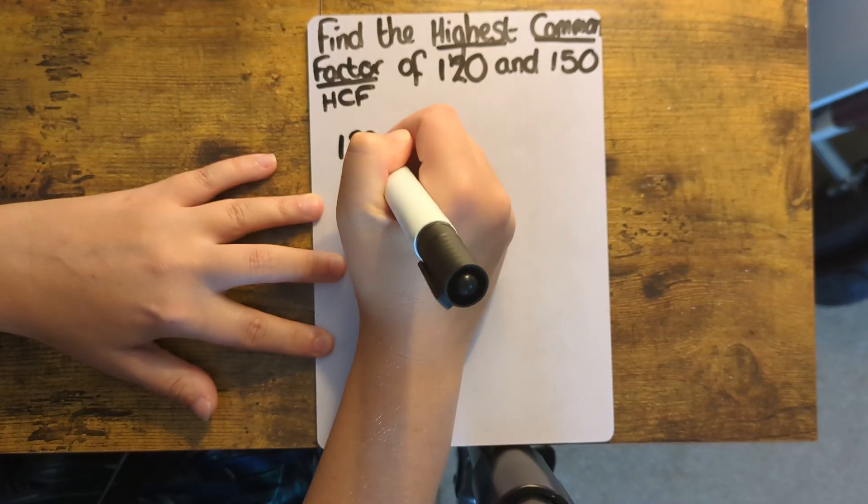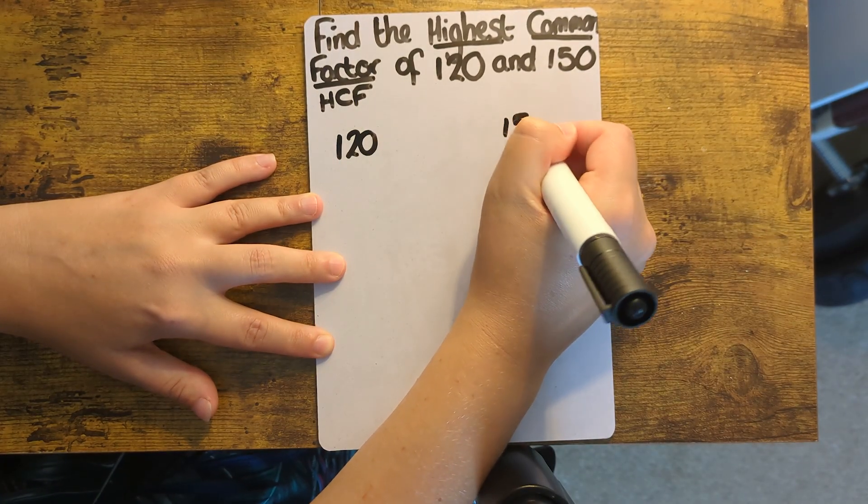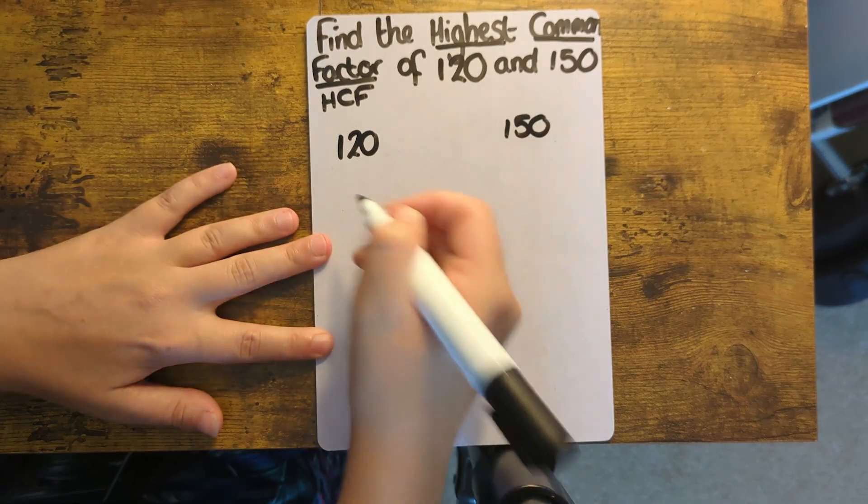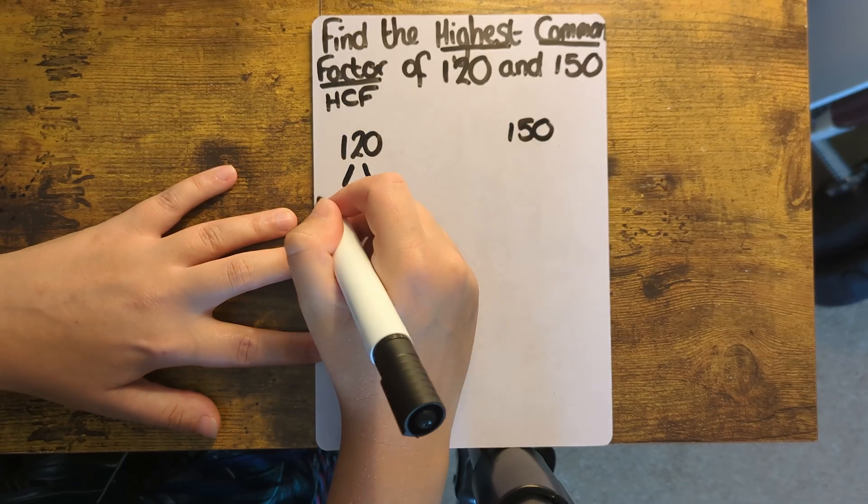First of all, we need to find the products of prime factors for each number. If you're not sure what this means, I've got a video on how to do this, so watch that first.